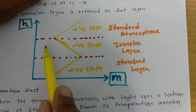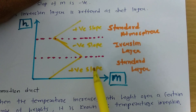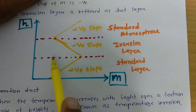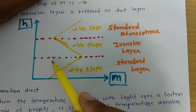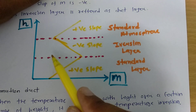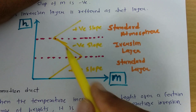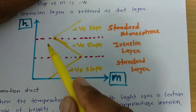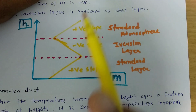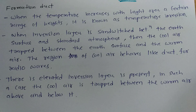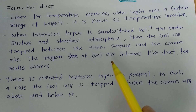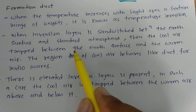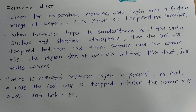As one can see here, the inversion layer is sandwiched between two standard atmospheric layers. From the lower layer to a certain height, as you increase height, temperature decreases. Within the inversion layer, as you increase height, temperature increases. And above that, temperature decreases again. So ultimately, the inversion layer is sandwiched between the earth's surface and the standard atmosphere, and cool air becomes trapped between the earth's surface and the warm air above. The region of cool air behaves like a duct for radio waves.